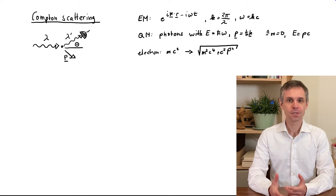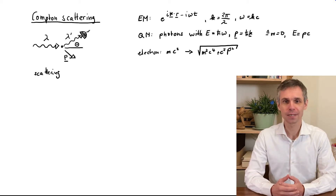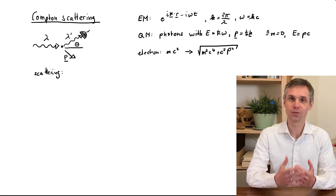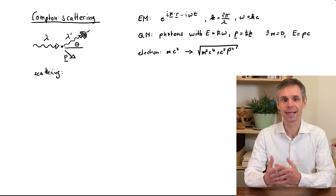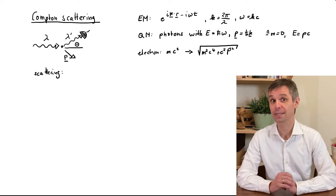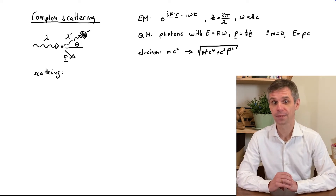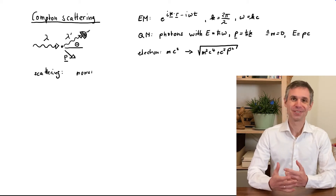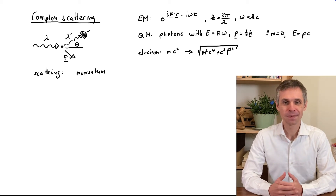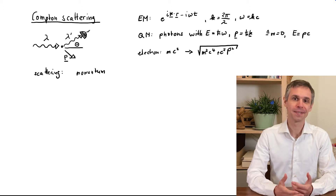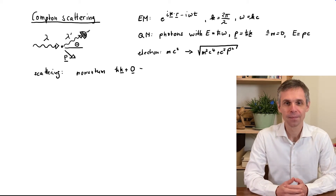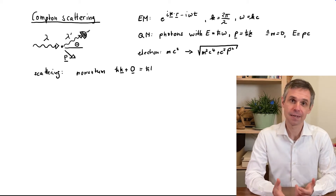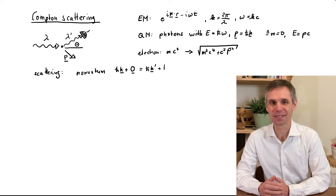With these assumptions, we can now describe the Compton scattering process as a collision between a photon and an electron that is initially at rest. In this collision, momentum is conserved. This means that the sum of the momenta of the two particles before the scattering process is the same as after the scattering process.